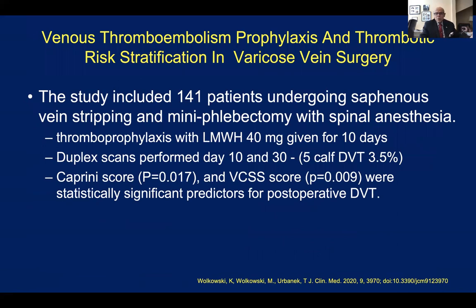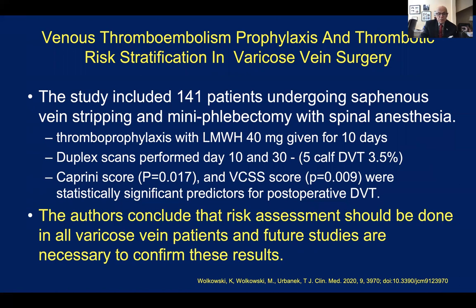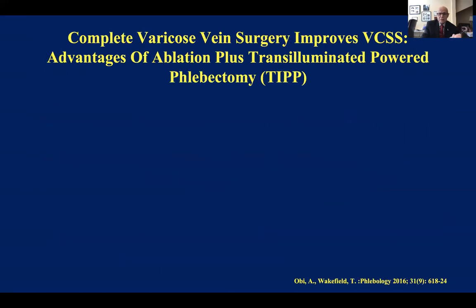In Poland, 141 patients underwent saphenous vein stripping and mini-phlebectomy in a study with my colleague vascular surgeon Thomas Orbanek. Thromboprophylaxis with low molecular weight heparin — 40 milligrams per day for 10 days — was given to at-risk patients. Duplex scans at 10 and 30 days revealed five calf vein thrombi. The Caprini score and the VCSS score were statistically significant predictors of postoperative DVT. The authors concluded that risk assessment should be done in all varicose vein patients, and we couldn't agree more — you cannot ignore the basic risk assessment of these patients.